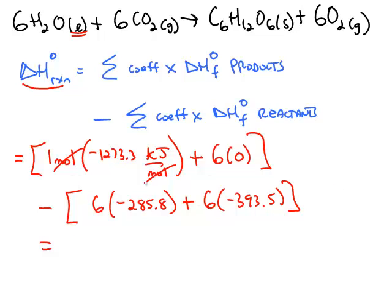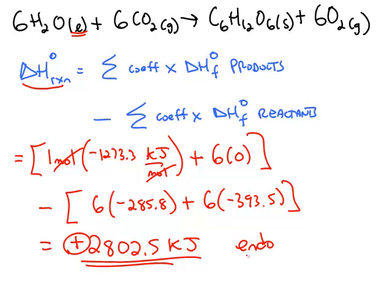Take all the products minus all the reactants, gives you an answer that's positive 2,802.5 kilojoules. It's an endothermic reaction because delta H works out to be a positive number.